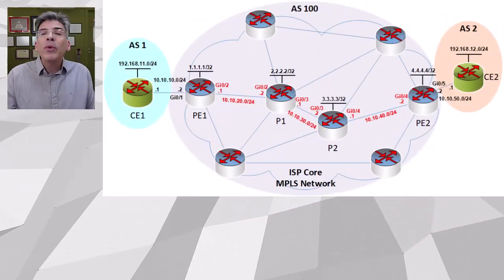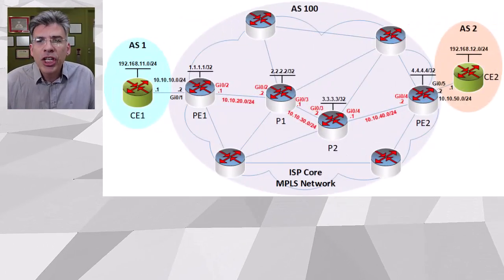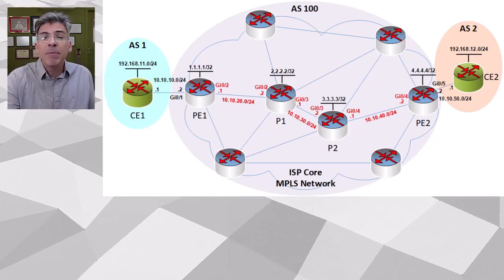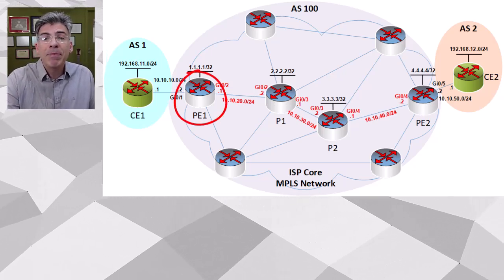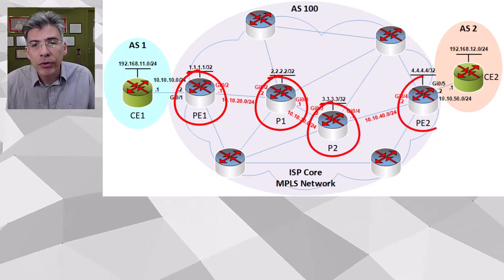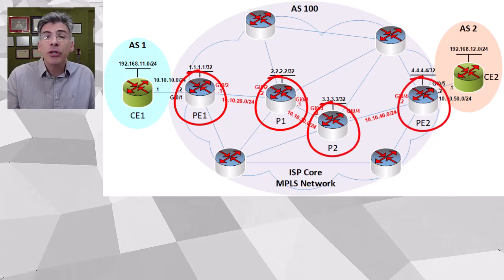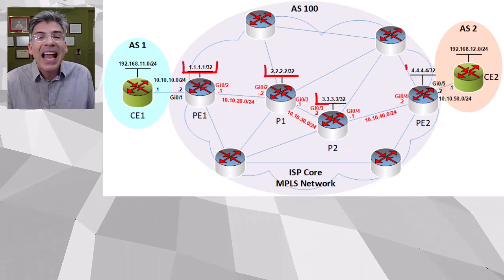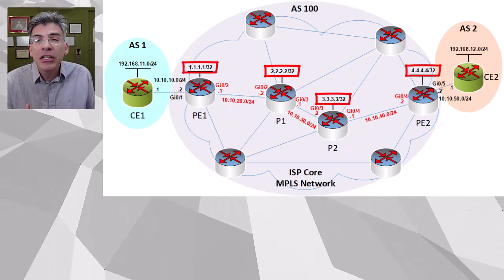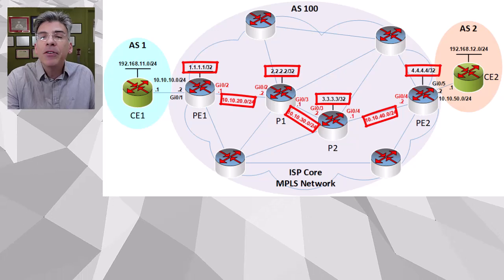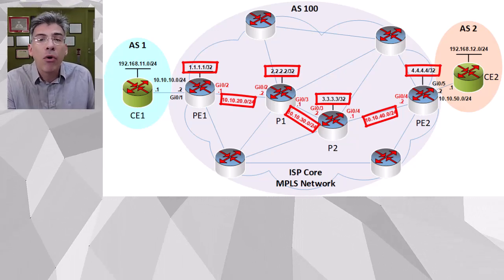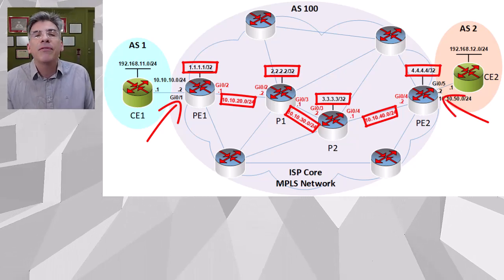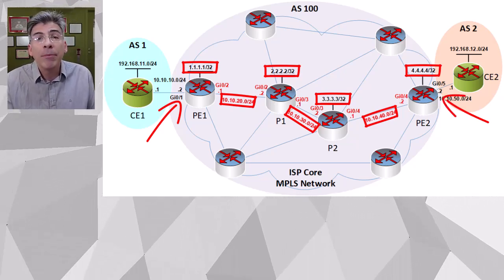Let's take a look at what we did in the previous video, just so that we know where we're starting off today. We configured the PE1, P1, P2, and PE2 routers with the IP addresses you see labeled here. We configured OSPF so that both the loopbacks and the physical interface networks are advertised throughout the MPLS core network, excluding these customer-facing interfaces on the PE routers.